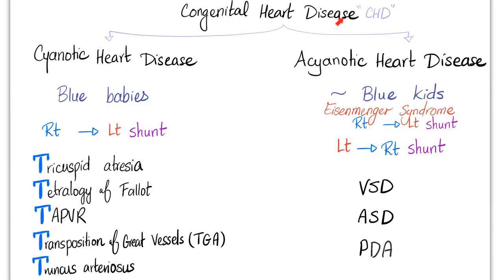Congenital heart disease is divided into two subtypes: cyanotic heart disease and acyanotic heart disease. Cyanotic heart disease produces blue babies, acyanotic may produce blue kids only later. In cyanotic heart disease, the patient is cyanotic because of right-to-left shunt. Examples all start with T: tricuspid atresia, tetralogy of Fallot, TAPVR, transposition, and truncus.